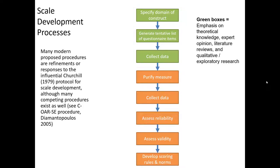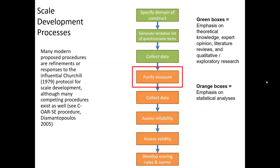Once you've reduced this set of questions down to a more manageable set, you'll collect some preliminary data. That's step four, where it says 'purify measure.' At this stage, a variety of statistical tools — those that are beyond the scope of today's class — can be utilized to help you identify which measurement items contain promise and which are unlikely to be useful for your final scale. Exploratory factor analysis, or EFA, is likely the most common procedure used during this stage.